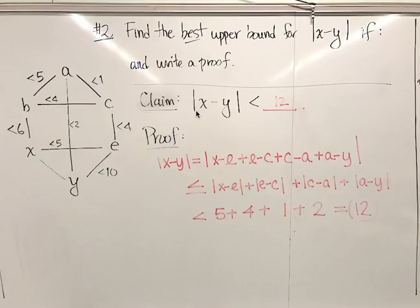So the claim is that the absolute value of x minus y must be less than 12. And how we got 12 is we looked in this graph and figured out what is the potentially shortest path from x to y, finding that the shortest way to get from x to y, this is a bit like the traveling salesman problem, is to go from x to e, and thence to c, and thence to a, and thence to y. So it's this circuitous path that takes us all the way around this part of the graph.